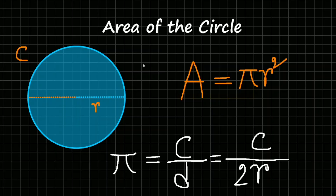Hello everyone, welcome to this video. One of the most basic formulas we learn in high school is the formula for the area of a circle, which says that if we have a circle with its radius being r, then the area of the circle A is equal to pi r squared. Unfortunately, in most cases we are taught this formula without showing its proof — we just basically memorize the formula.